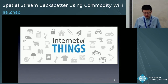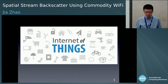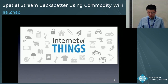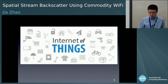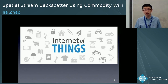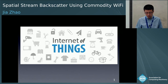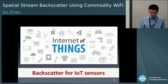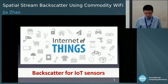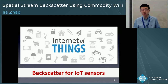Internet of Things merges the physical world and the digital world. IoT applications such as smart control, pervasive sensing, and intelligent interactions need to deploy a diversity of sensors, and these sensors use different kinds of network protocols to transmit data. Since there are a huge number of sensors to be deployed, a critical issue facing these network protocols is power. Backscatter communication has emerged as a promising solution that enables IoT sensor data transmission in a cost and energy efficient way.